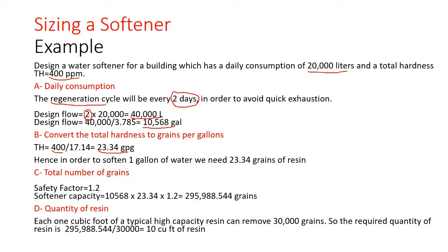Third, we need to know the total number of grains. We will choose a safety factor of 1.2. Therefore, the softener capacity will be 10,568 times 23.34 grains of resin, times the safety factor of 1.2, giving us the answer in grains. We know that each cubic foot of a typical high-capacity resin can remove 30,000 grains, so the required quantity of resin will be the total number of grains divided by 30,000. We need around 10 cubic feet of resin to soften our water.